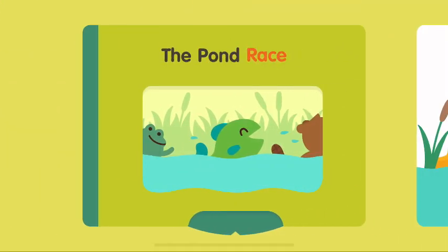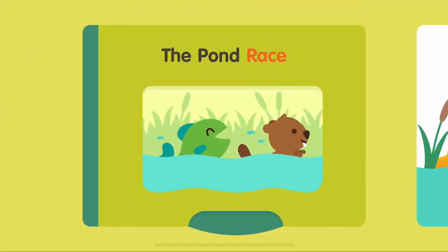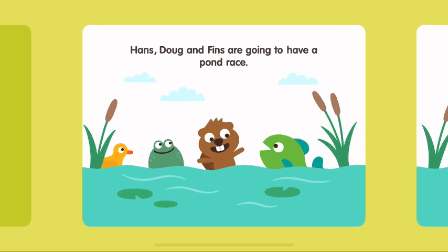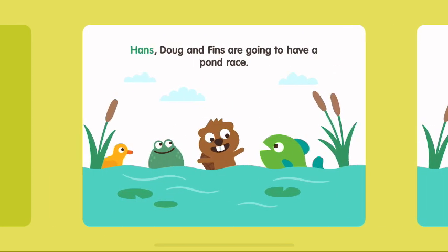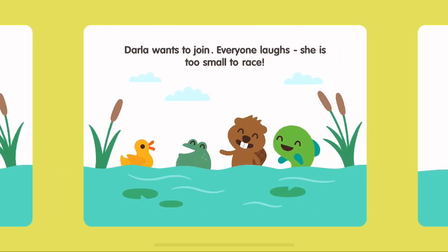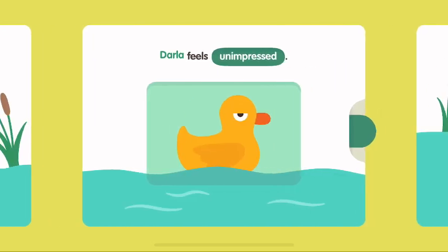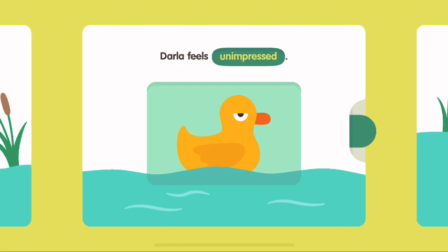The pond race. Hans, Doug, and Finn's are going to have a pond race. Darla wants to join. Everyone laughs. She is too small to race. Darla feels unimpressed.